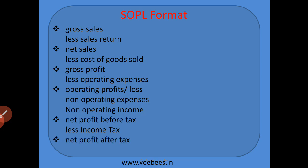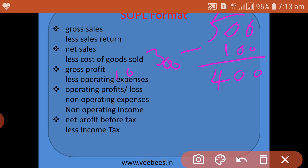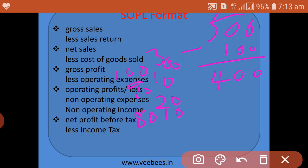After deducting income tax from EBIT, we arrive at net profit after tax. To summarize the format: we start with gross sales, deduct sales returns to get net sales, deduct cost of goods sold to get gross profit, deduct operating expenses to get operating profit, then adjust non-operating expenses and non-operating income to get net profit before tax, deduct income tax, and arrive at net profit after tax.